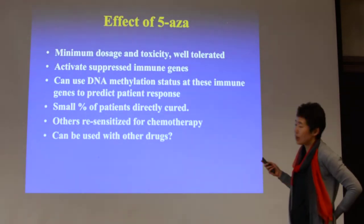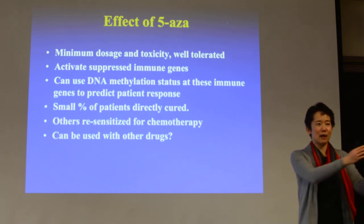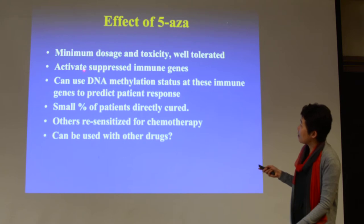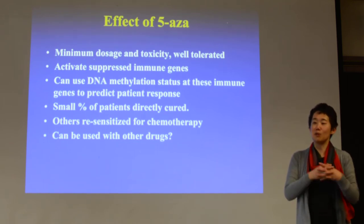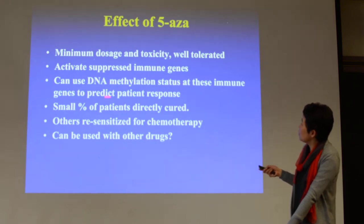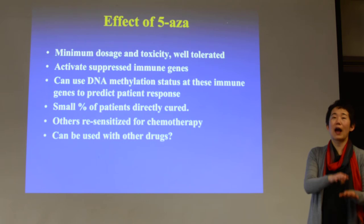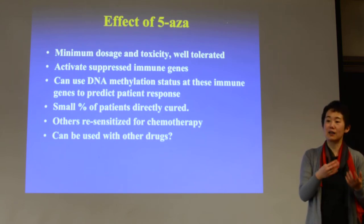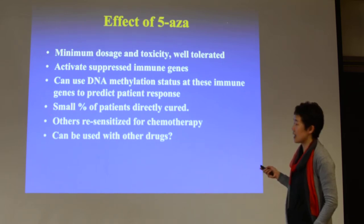What is the effect of this treatment? They see minimum dosage and toxicities — much better tolerated than the original mustard gas and MDS drug — and sometimes they can treat transiently. Interestingly, it activates suppressed immune genes. A lot of genes that are hypomethylated turn out to be related to the immune system. When treated, these immune genes get activated. In addition, the DNA methylation status, particularly at immune genes, can be used to predict patient response.